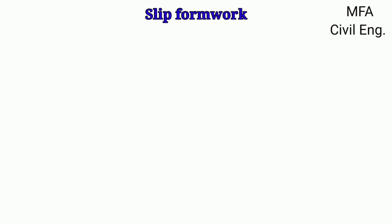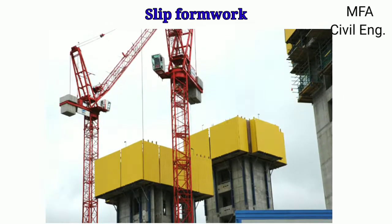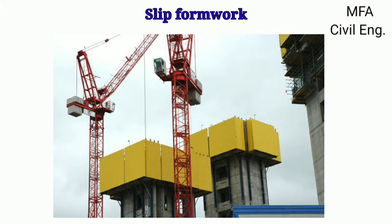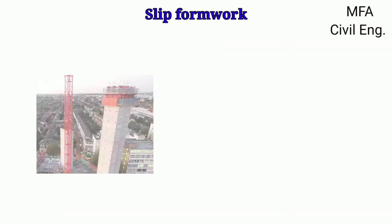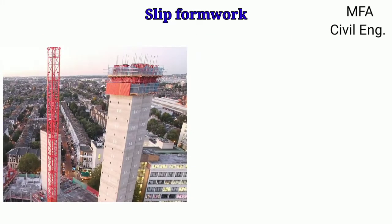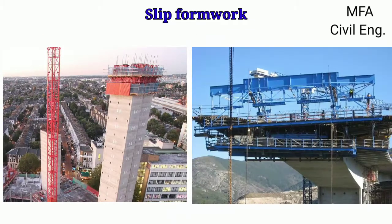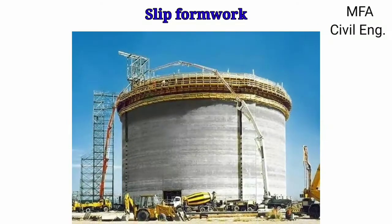Hello everyone, my name is Faisal, you are watching MFA Civil Engineering. Slip form construction is an advanced method for building large towers or bridges. The name refers to the moving form — concrete is poured into the formwork which moves along the project as the previously poured concrete gets hardened.